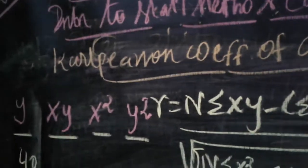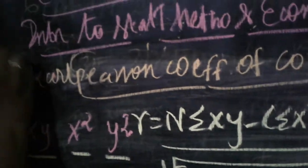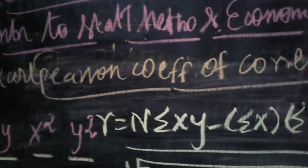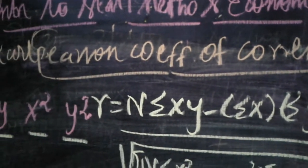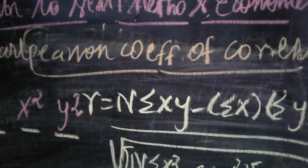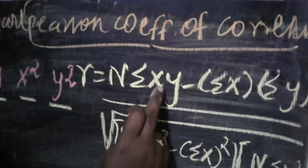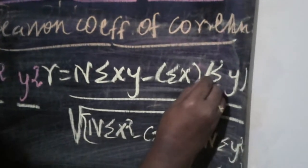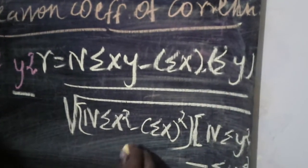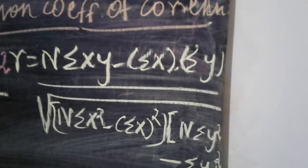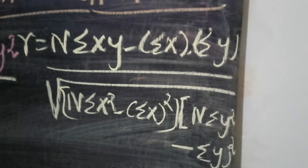Karl Pearson's coefficient of correlation carries 5 marks — very important. The formula is: r = [n·Σxy − Σx·Σy] ÷ √[(n·Σx² − (Σx)²) × (n·Σy² − (Σy)²)]. Listen carefully — it is easy to understand.